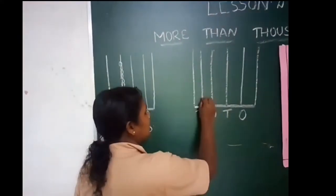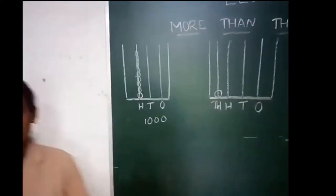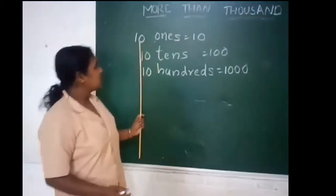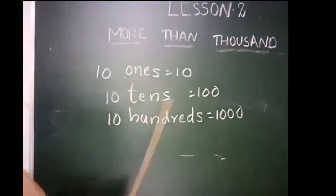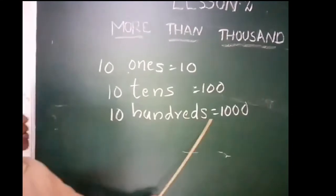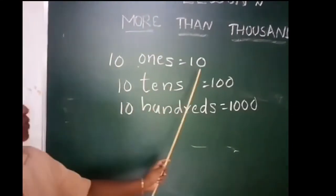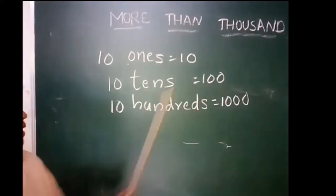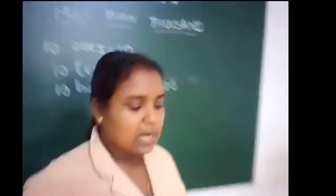So thousand can be represented like this. Listen: ten ones equals ten, ten tens equals hundred, ten hundreds equals thousand.